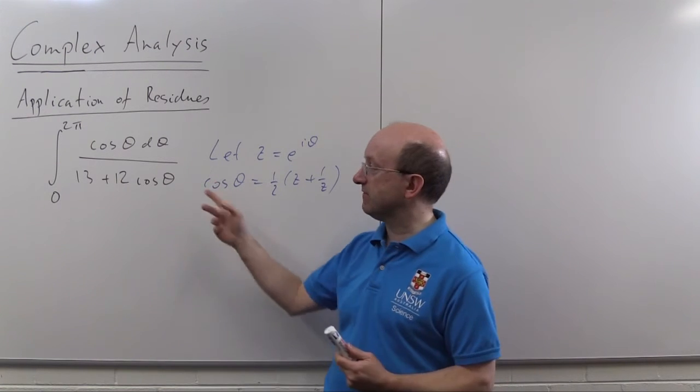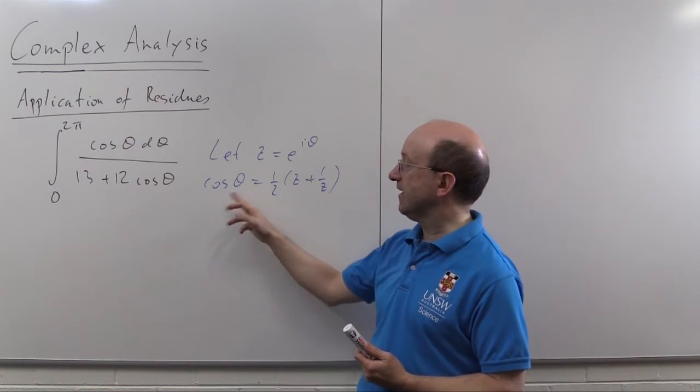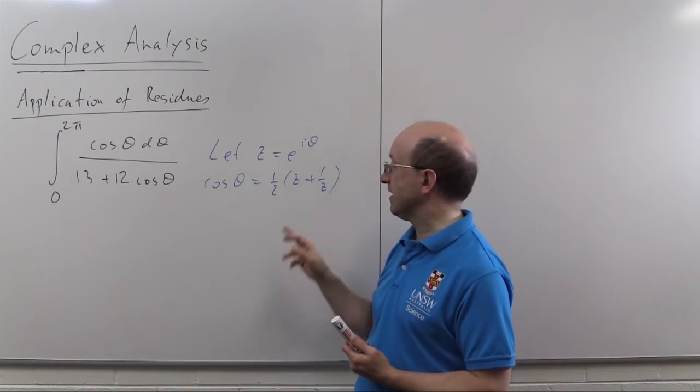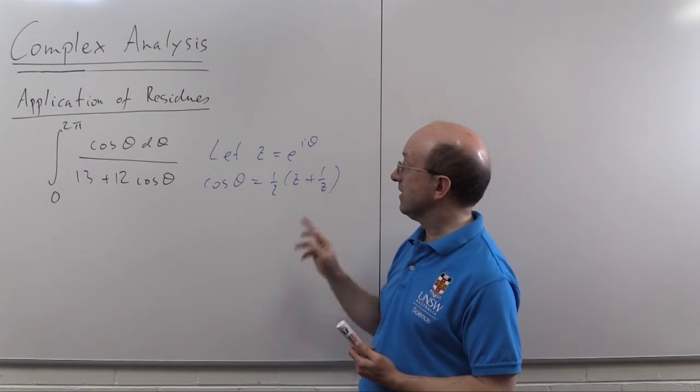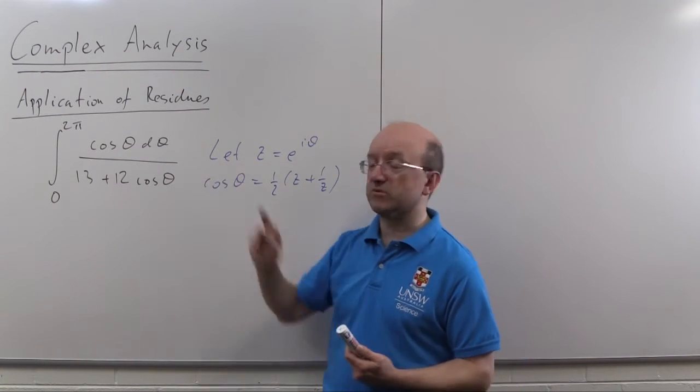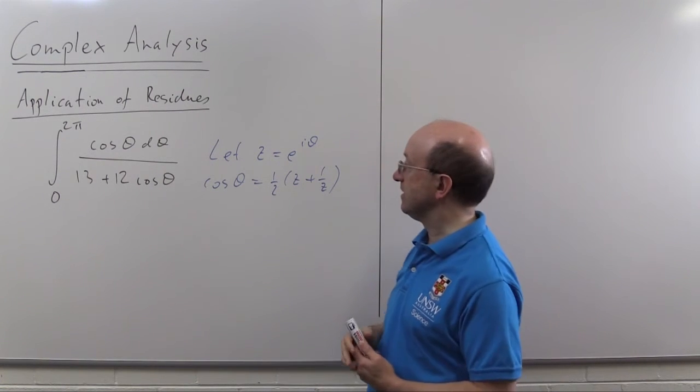Sin theta, we don't have a sin theta here, but if there was an example with sin theta, sin theta would be one upon two i, z minus one upon z, and you could then substitute that in. And the other thing we need is, of course we're going to do a change of variable, we need to sort out the d theta.